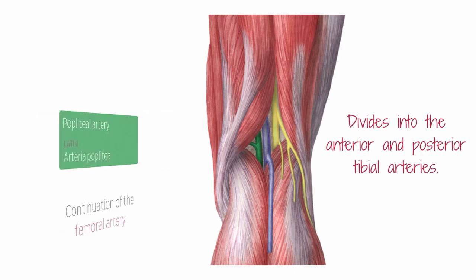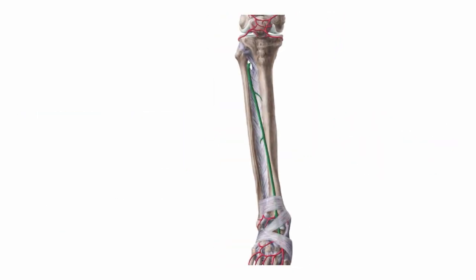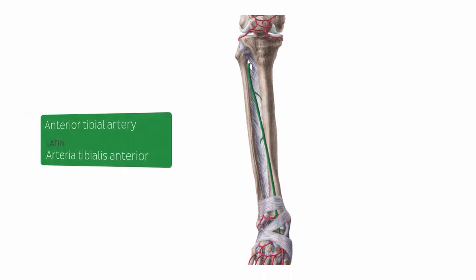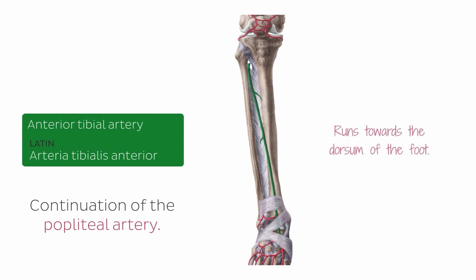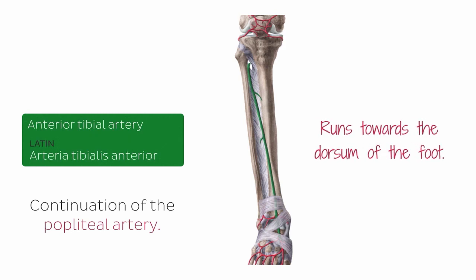We're now turning the leg to an anterior view, where we're highlighting the anterior tibial artery. This artery is one of the two continuations of the popliteal artery and runs from the lower margin of the popliteal muscle anteriorly towards the dorsum of the foot — the top of your foot — which you can partially see here in this image. At this point, this artery continues as the dorsal artery of the foot.